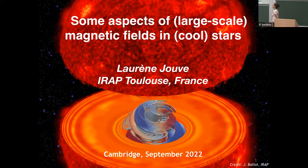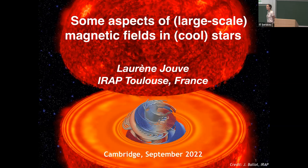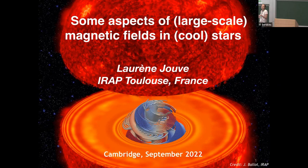The last talk of today is by Lorenjou. I was asked to talk about models and observations of stellar magnetism, which is really broad, so I decided to limit myself to some aspects only of the large-scale magnetic fields in cool stars — stars which have a convective envelope and a radiative interior — mostly focusing on the most recent results.